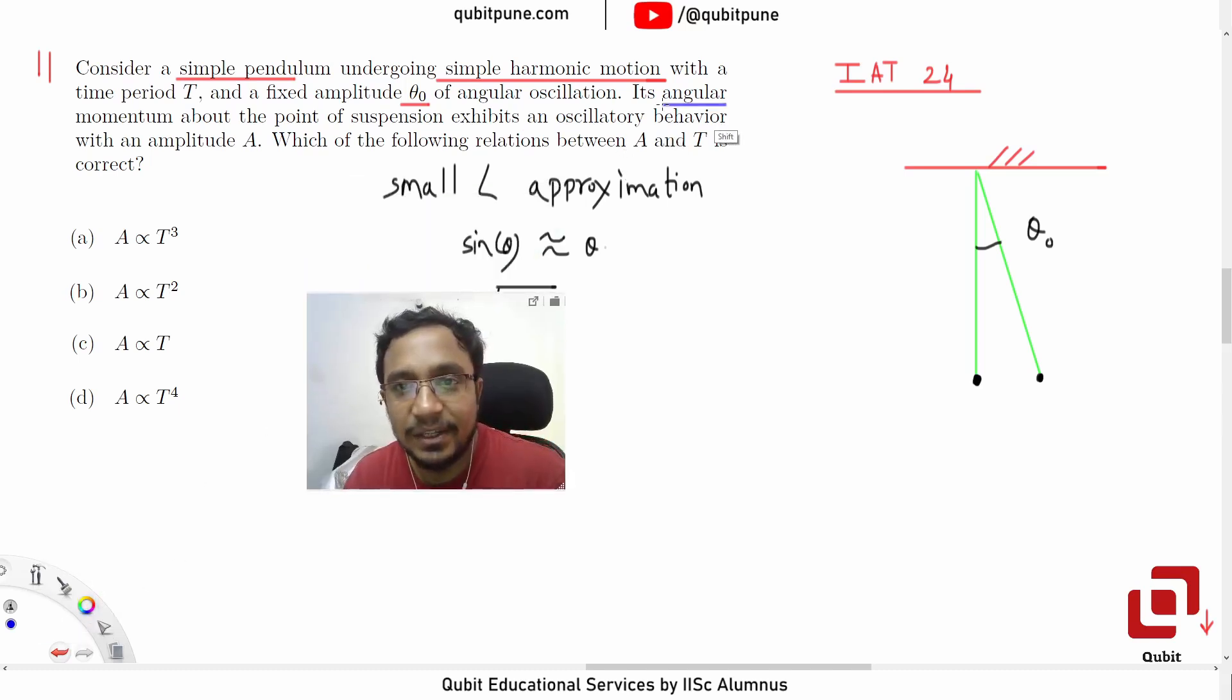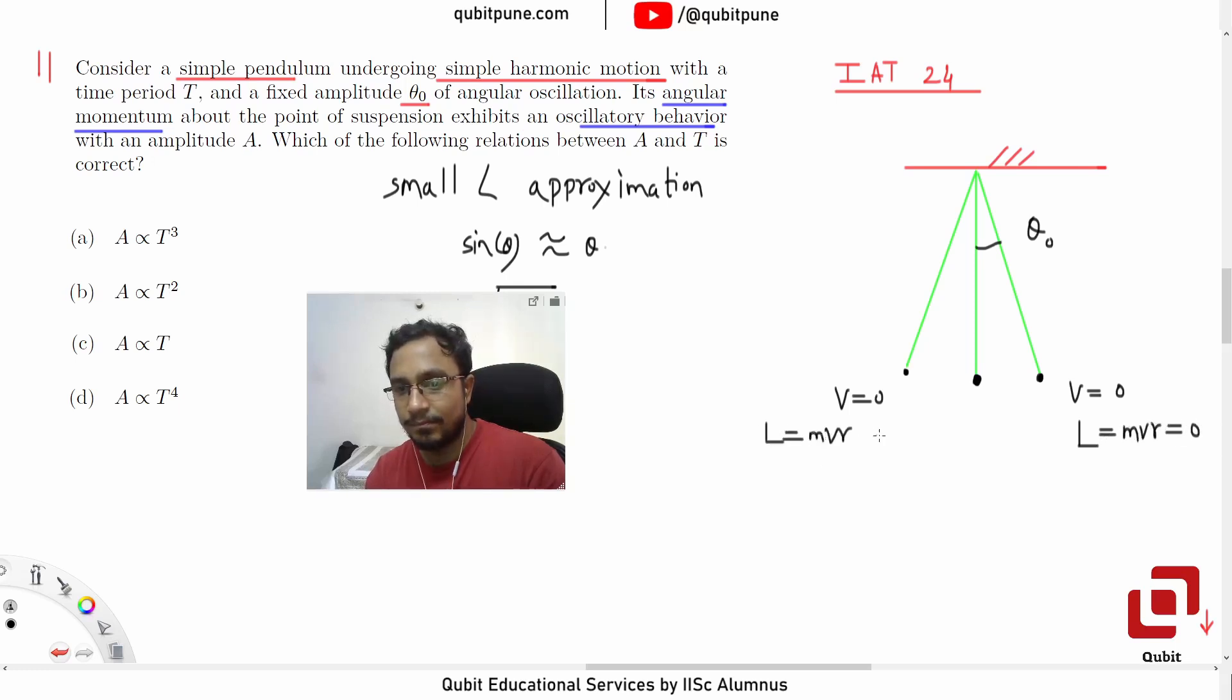They have also said that angular momentum exhibits oscillatory behavior. When any oscillating object is at the extreme positions, what can be said about the velocity? Zero. So if the velocity is zero here and zero there, can we say that the angular momentum, which is MVR, is also zero. And because they are saying that it exhibits an oscillatory behavior, we can say that here, because the speed is maximum, angular momentum should also be maximum.